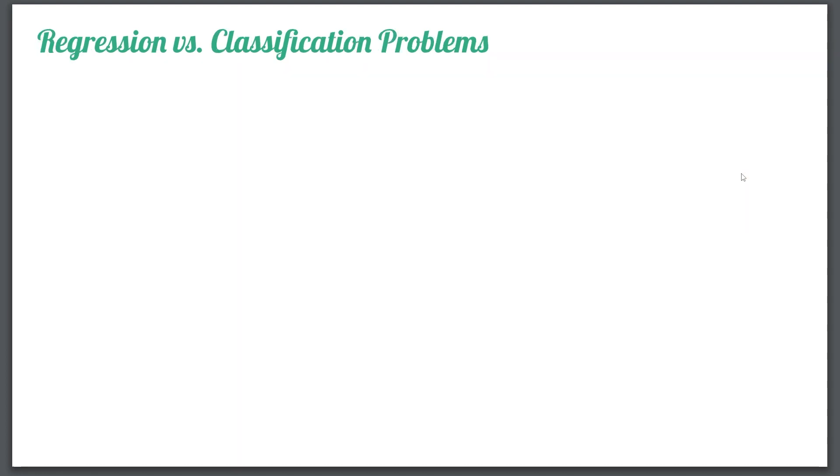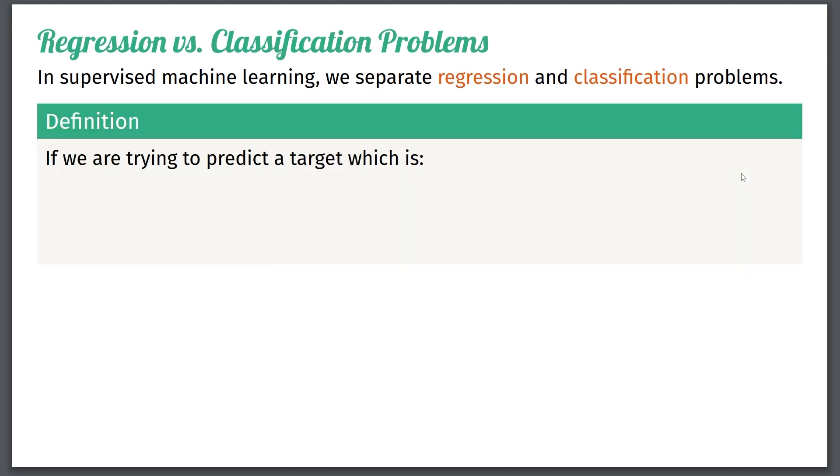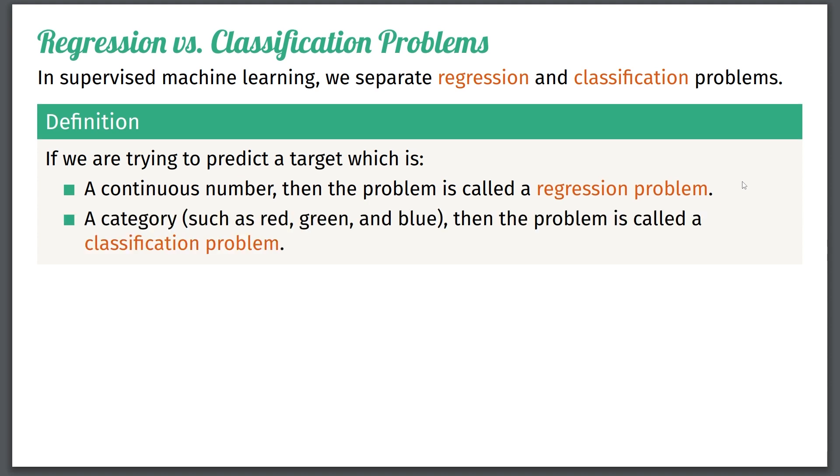Secondly, within supervised, we can also make a further kind of distinction. We have regression problems, and we have classification problems. So what's the difference here? In supervised machine learning, we separate these, as I said, if you're trying to predict a target, which is a continuous number, so say one number between zero and 100, any decimal number in between, then the problem is called a regression problem. On the other hand, if you're trying to predict a category, such as red, green, and or blue, then the problem is called a classification problem.